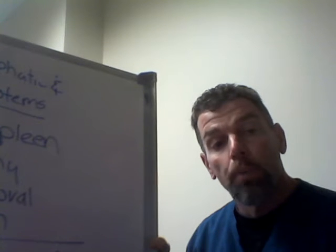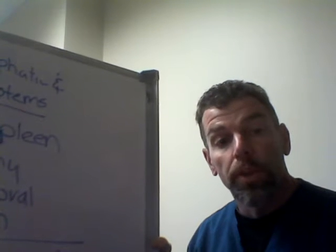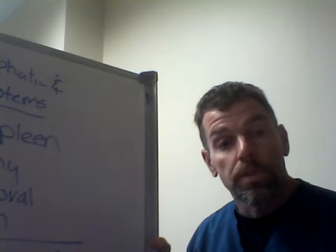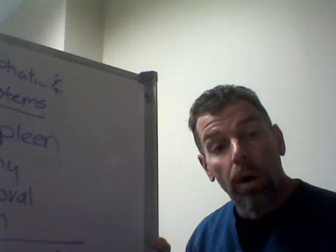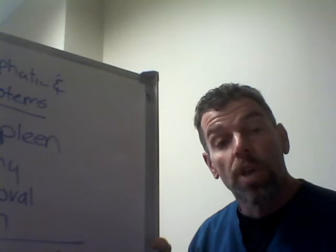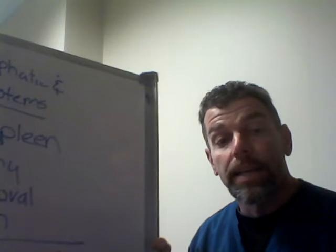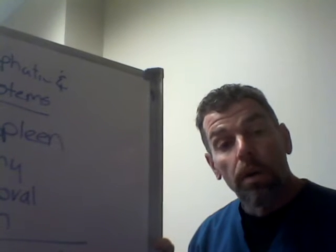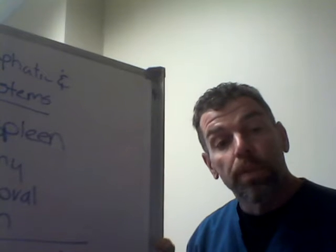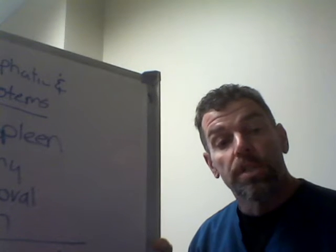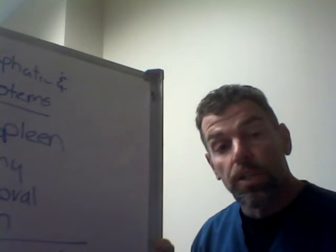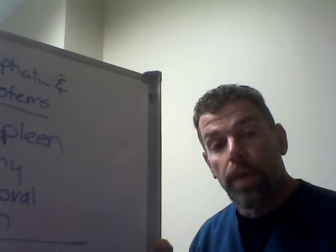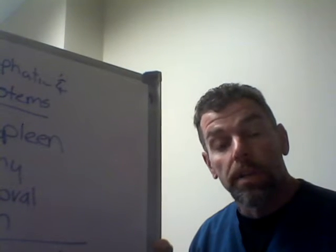We have some very important organs associated with the lymphatic system. As already mentioned, we have the vessels of the lymphatic system, and we also have the lymph nodes, which are plentiful throughout the body, especially in the torso region and the groin region. We also have the spleen, which is very important because it is one of the largest lymphatic structures, and it also helps to get rid of worn-out red blood cells.